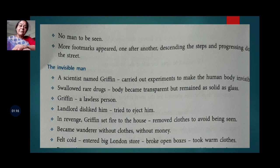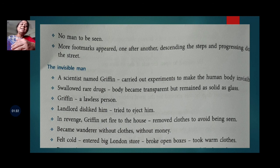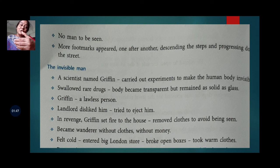A scientist named Griffin carried out experiments to make the human body invisible. He swallowed a rare drug and his body became transparent, remaining solid as glass. With this gift, Griffin started misusing his invisibility and became a lawless person.